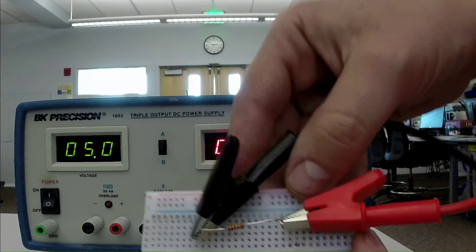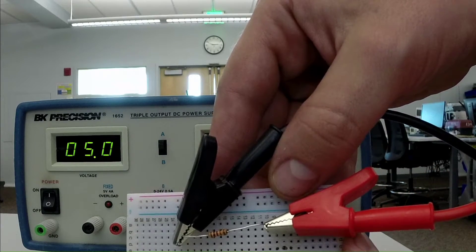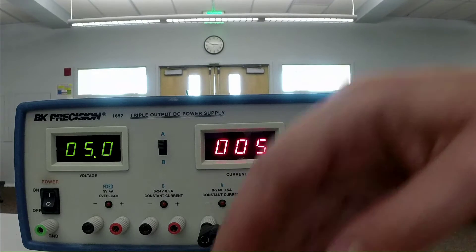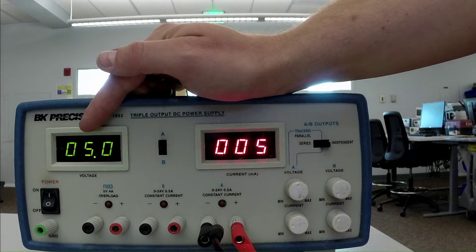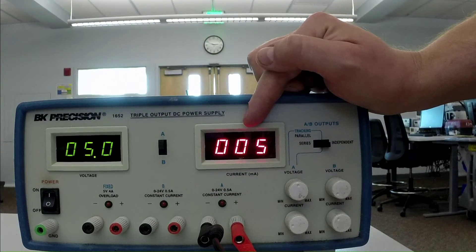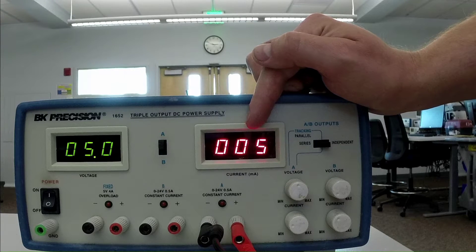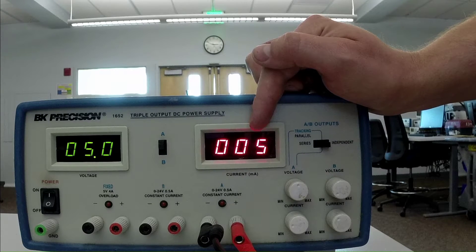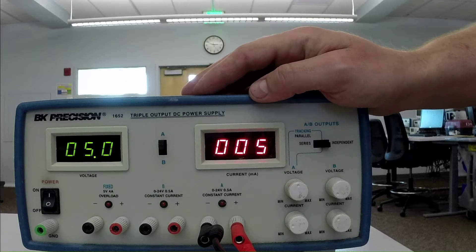So here's what my breadboard looks like now. I've just clipped onto the two ends of the resistor. And you can see we're supplying 5 volts. And now we're measuring that there's 5 milliamps of current flowing through the circuit, which is what you would expect from Ohm's Law.